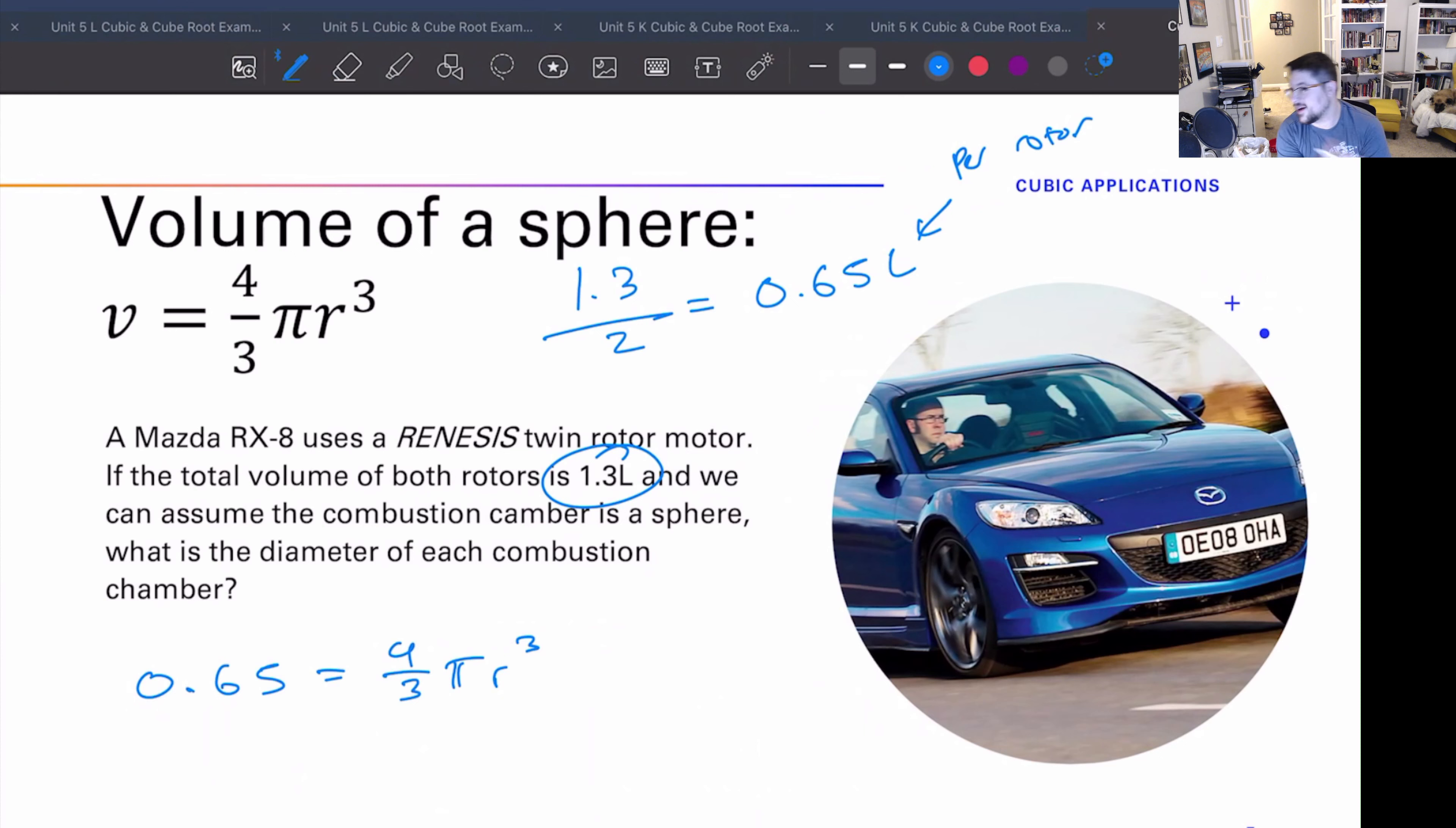We have 0.65 equals four thirds pi r cubed. And another thing worth noting is that liters, I believe, is centimeters cubed, a thousand centimeters or I feel like it's a thousand centimeters cubed. Let me just do a quick little Google on that thing. Liters to centimeters. Yep, one liter is a thousand centimeters cubed. Cool, good to know.